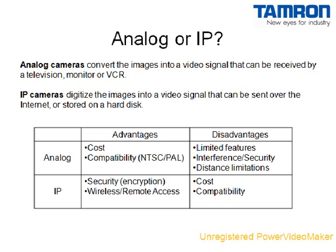A drawback of analog signals is that they are susceptible to interference and noise and also cannot be encrypted, making analog cameras a poor choice if privacy or access control is a concern. IP stands for internet protocol. IP cameras convert the images into a digital signal that can be sent over the internet or stored on a hard disk. Although generally more expensive than analog cameras, IP cameras enable remote security because the digital signal can be carried over long distances. The signal can also be encrypted to restrict access to the images. IP cameras compress images using a variety of compression standards, so it is important to make sure that the IP camera you choose is compatible with your recording system.